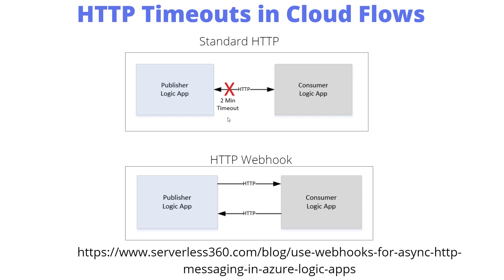Whenever you have a connection that is open, it's taking up resources on both sides of the pipe. You've got a client that gets locked up because they're waiting for a response and can't do anything else, and on the server side it has to fulfill those requests. These types of architectures won't scale well if there's a lot of volume.